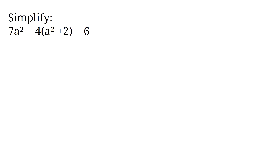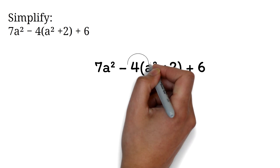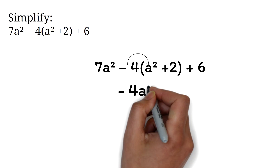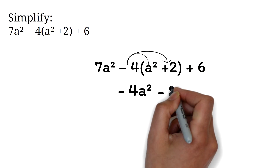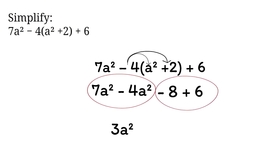Simplify 7a squared minus 4 times (a squared plus 2) plus 6. We will start by distributing the minus 4. Please be careful when your number is preceded by a minus sign — you have to distribute it also. Negative 4 times a squared is negative 4a squared. Then negative 4 times 2 is negative 8. We can now add like terms: 7a squared minus 4a squared is 3a squared. Constant terms are also like terms: negative 8 plus 6 is negative 2. So our final answer is 3a squared minus 2.